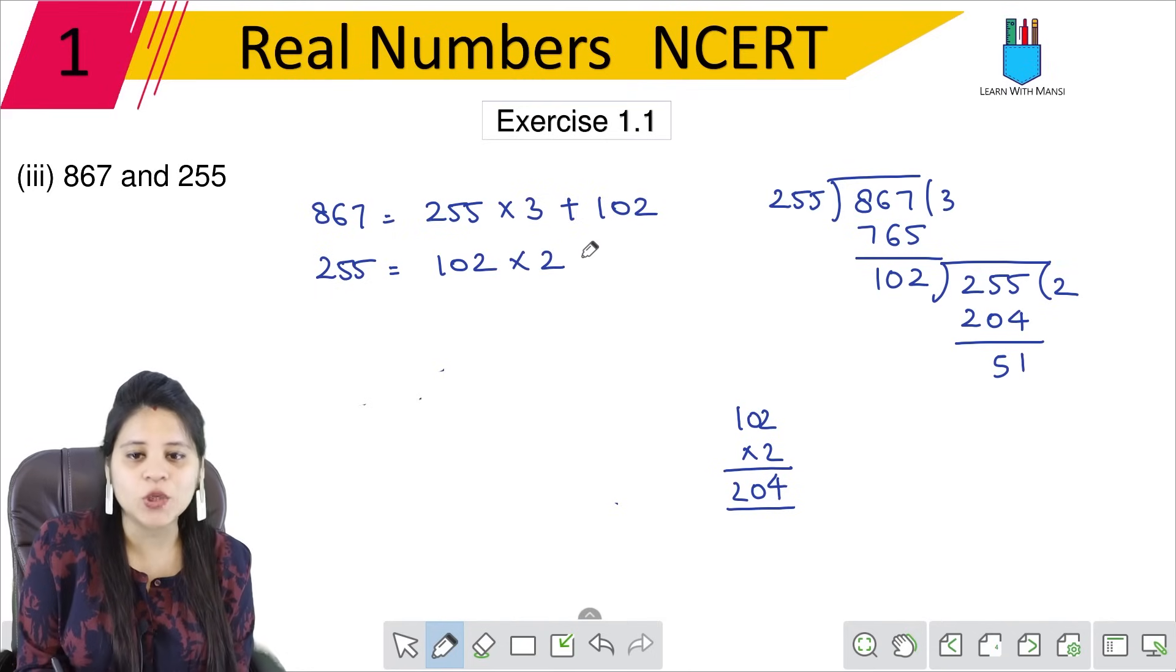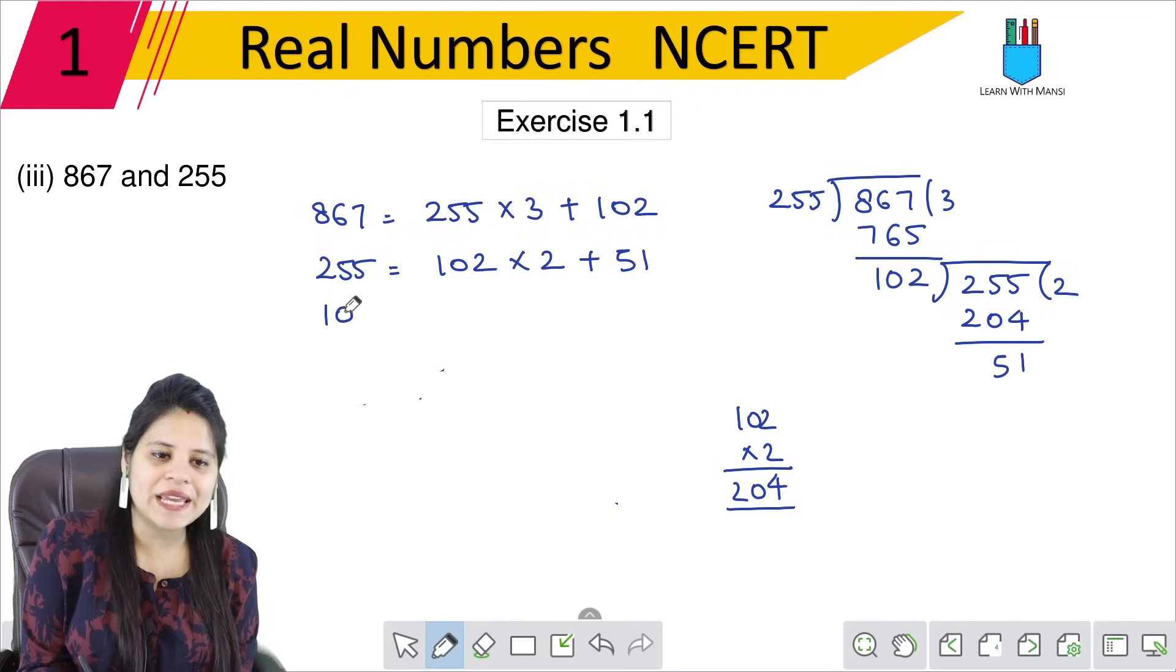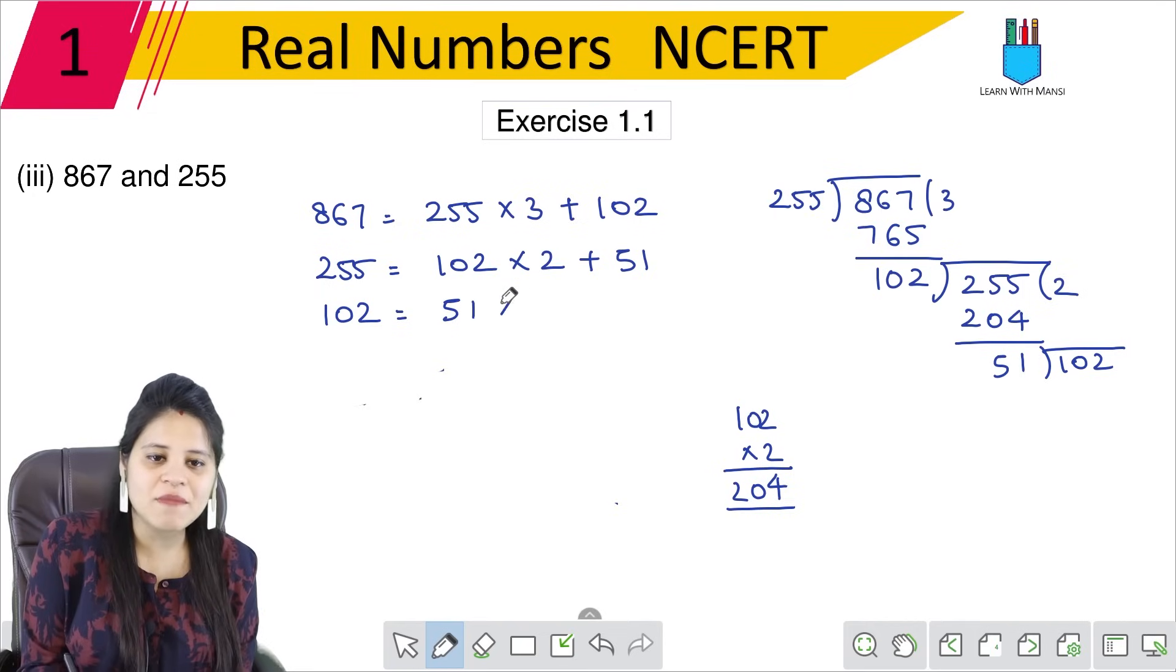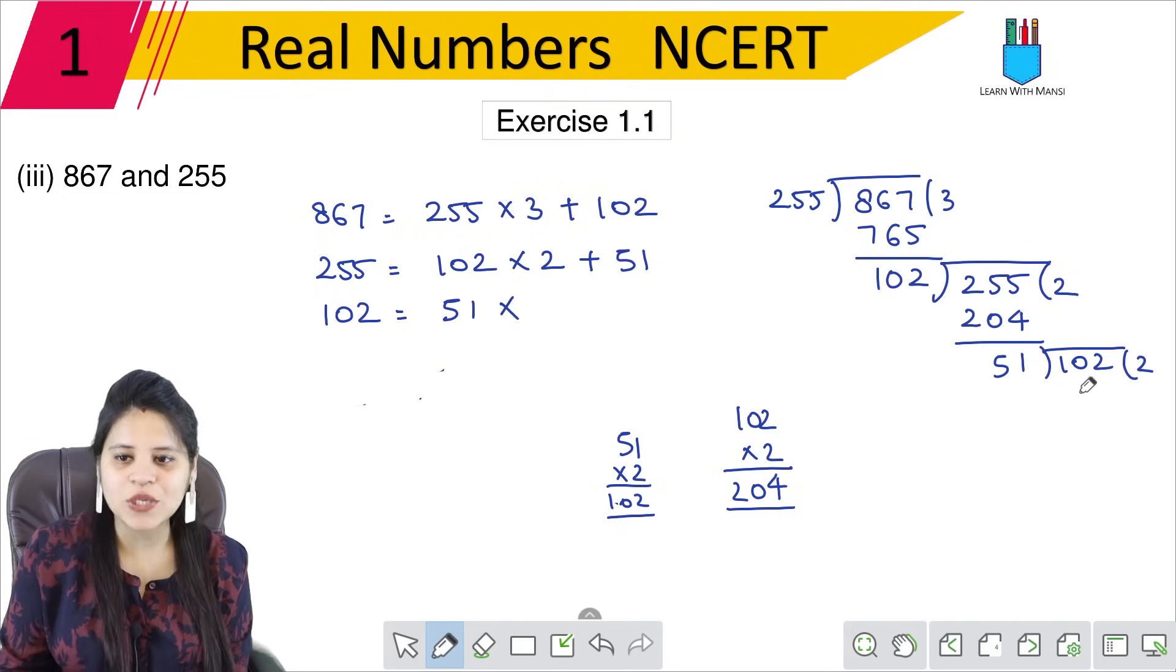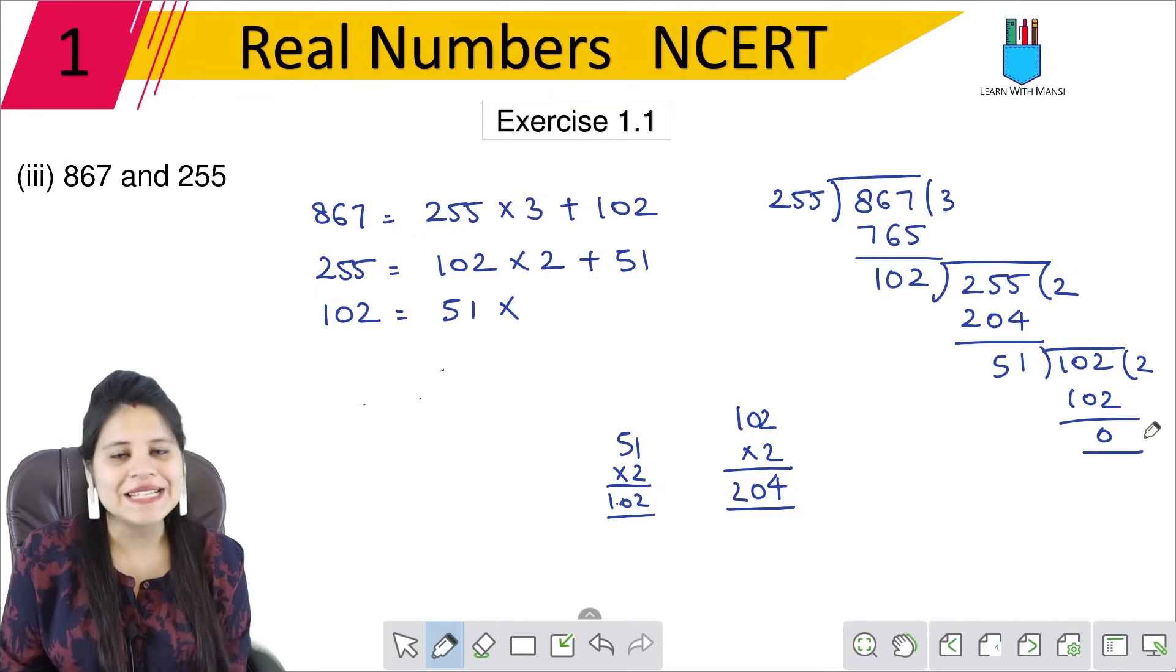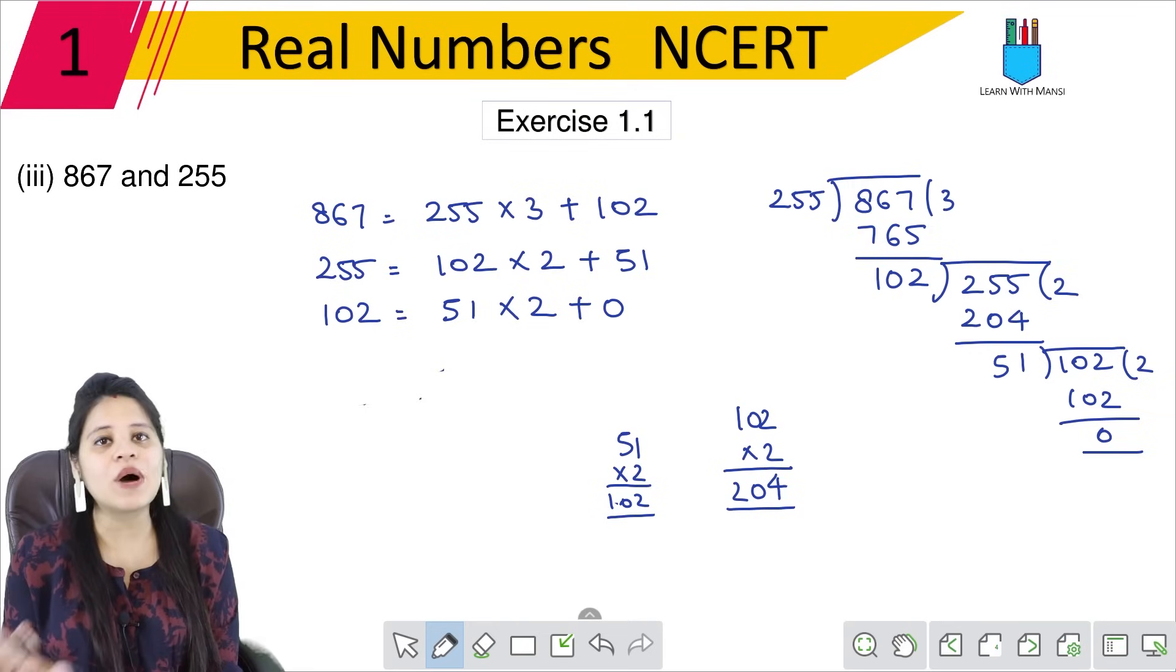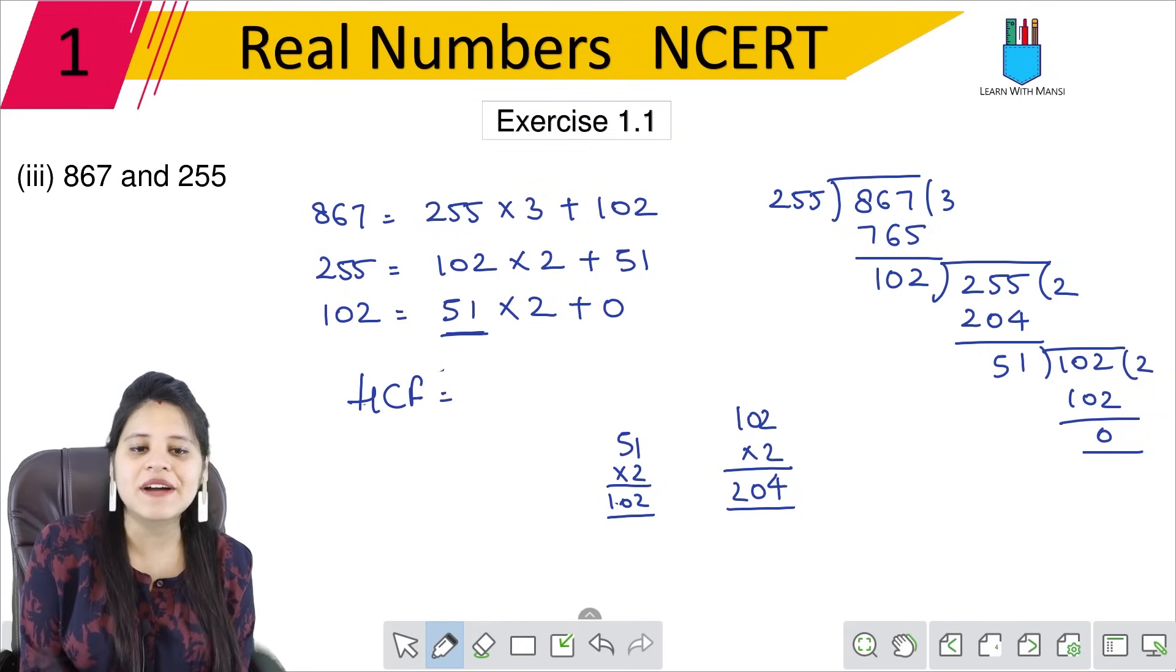Now we divide 102 by 51. 51 multiplied by 2 equals 102, and the remainder is 0. So 102 equals 51 into 2 plus 0. The remainder is 0, so we stop. HCF will be the last divisor, which is 51. So HCF is 51.